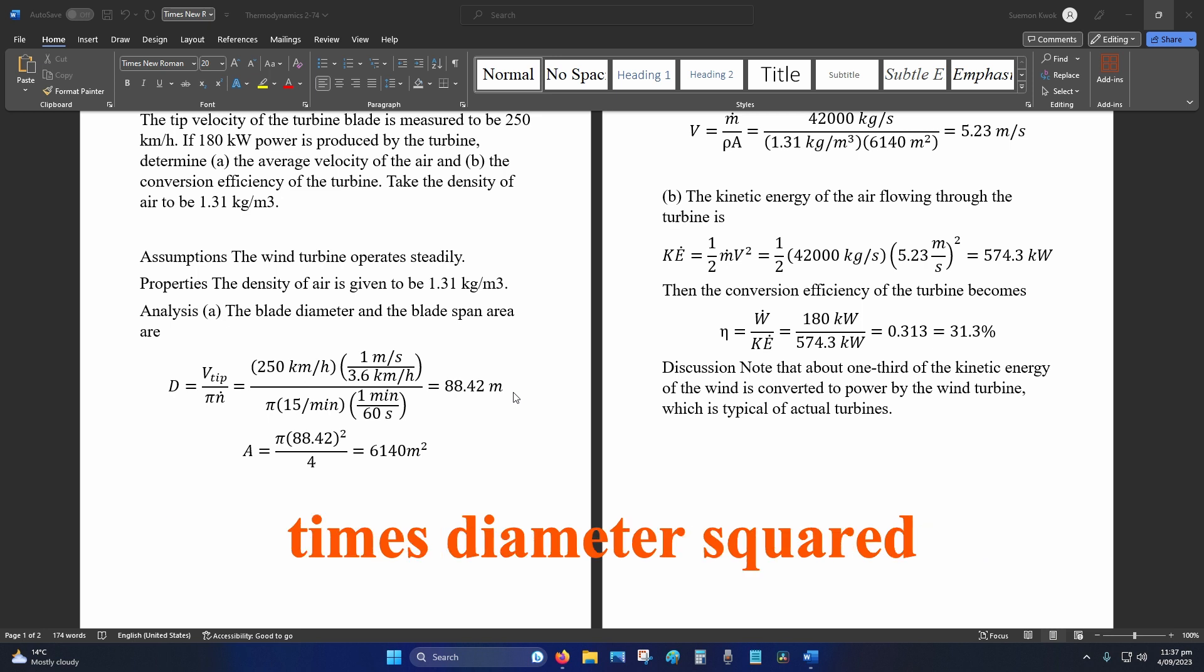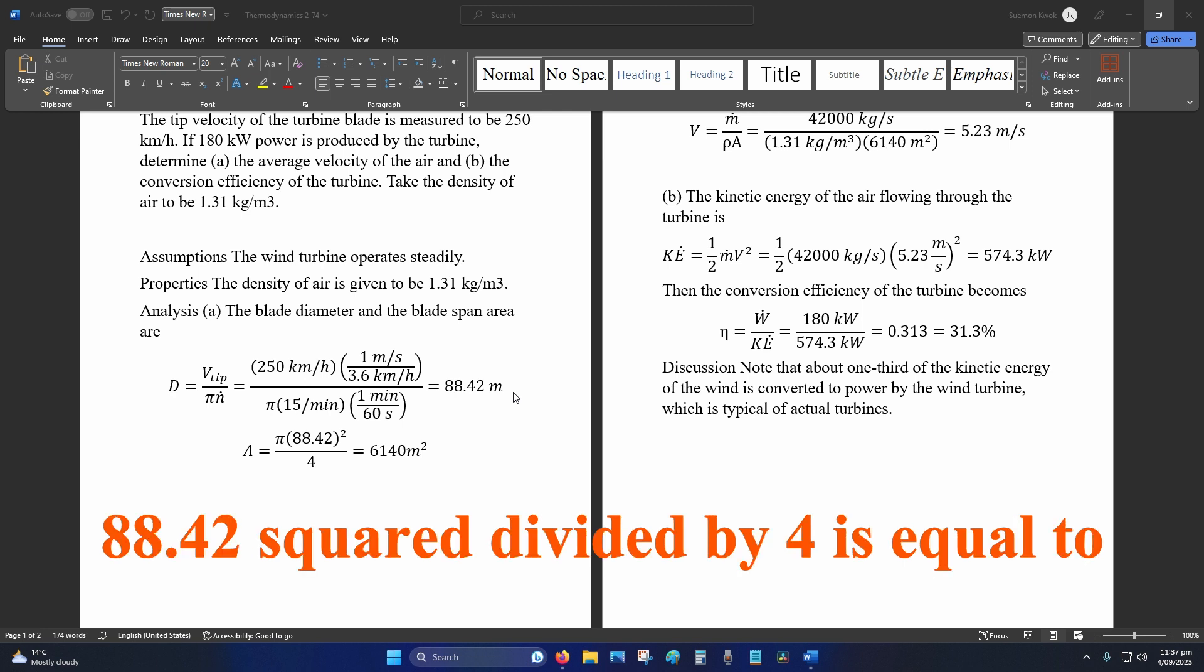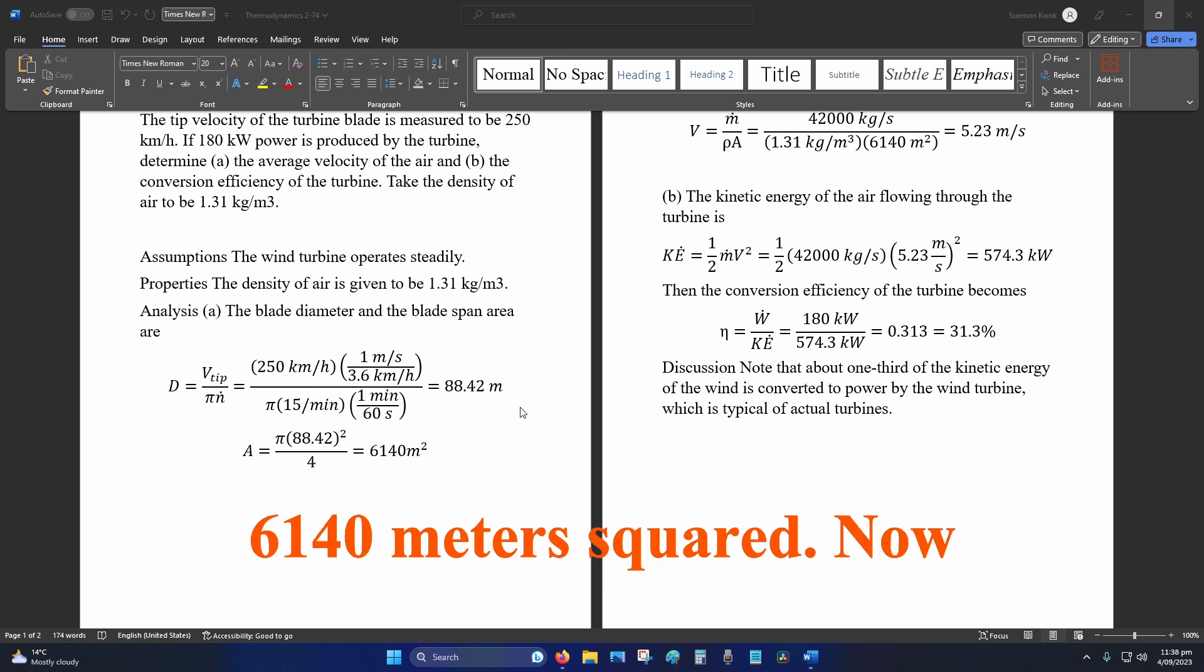To find the area, that's pi times diameter squared divided by 4. So pi times 88.42 squared divided by 4 equals 6,140 meters squared.